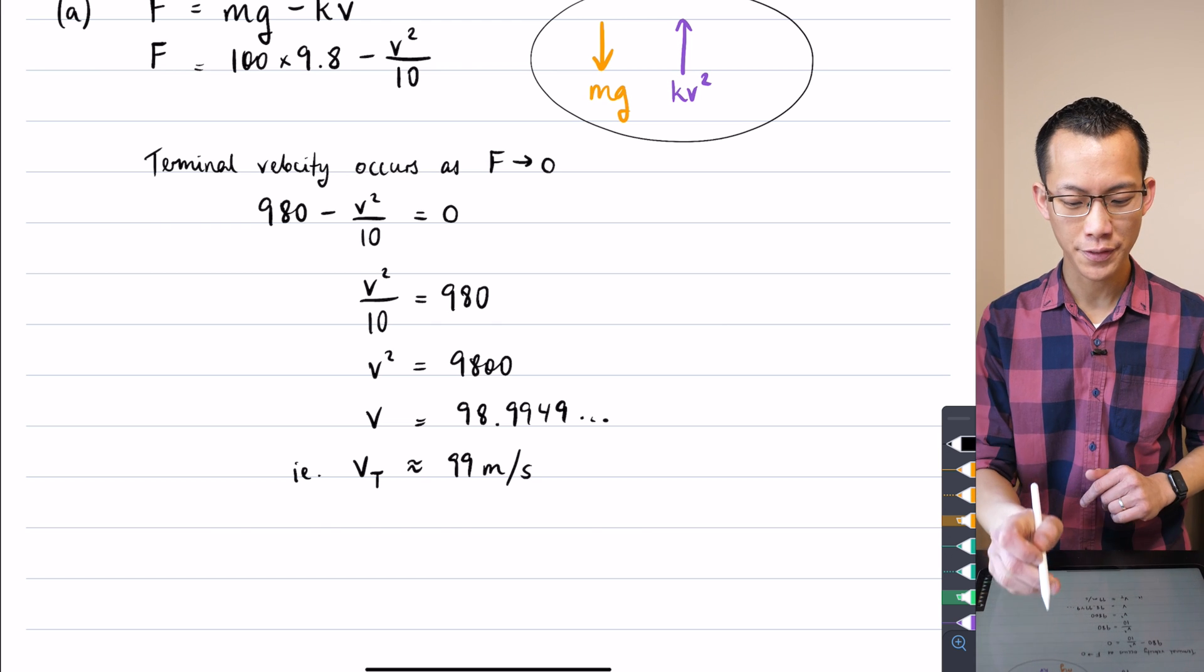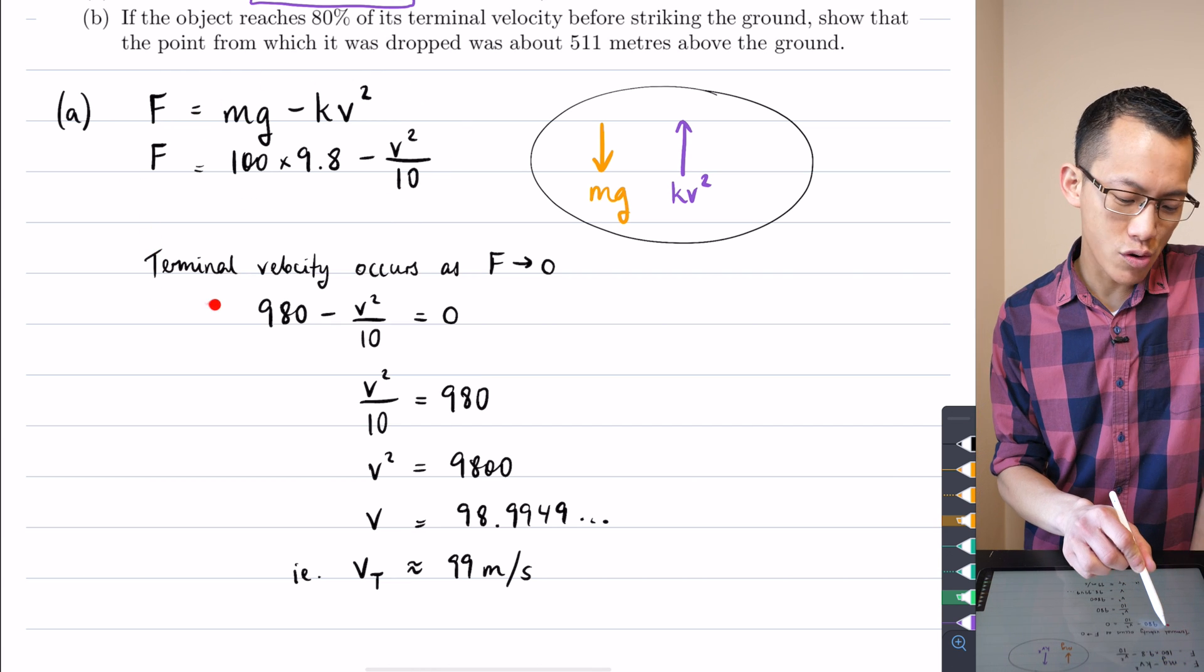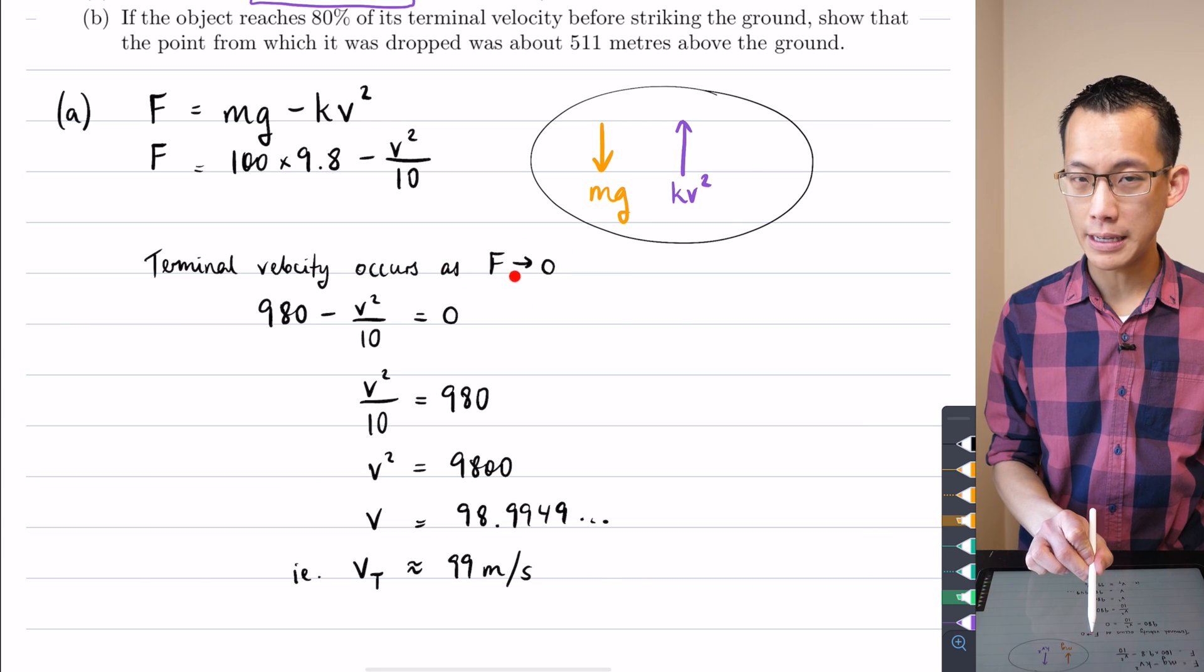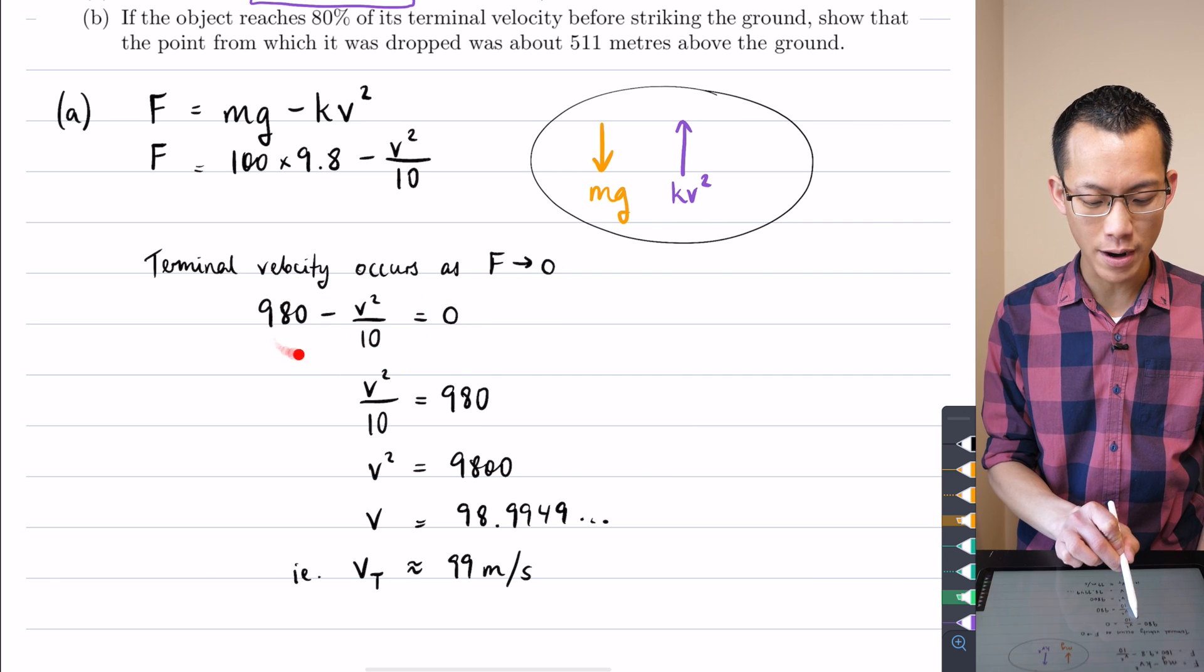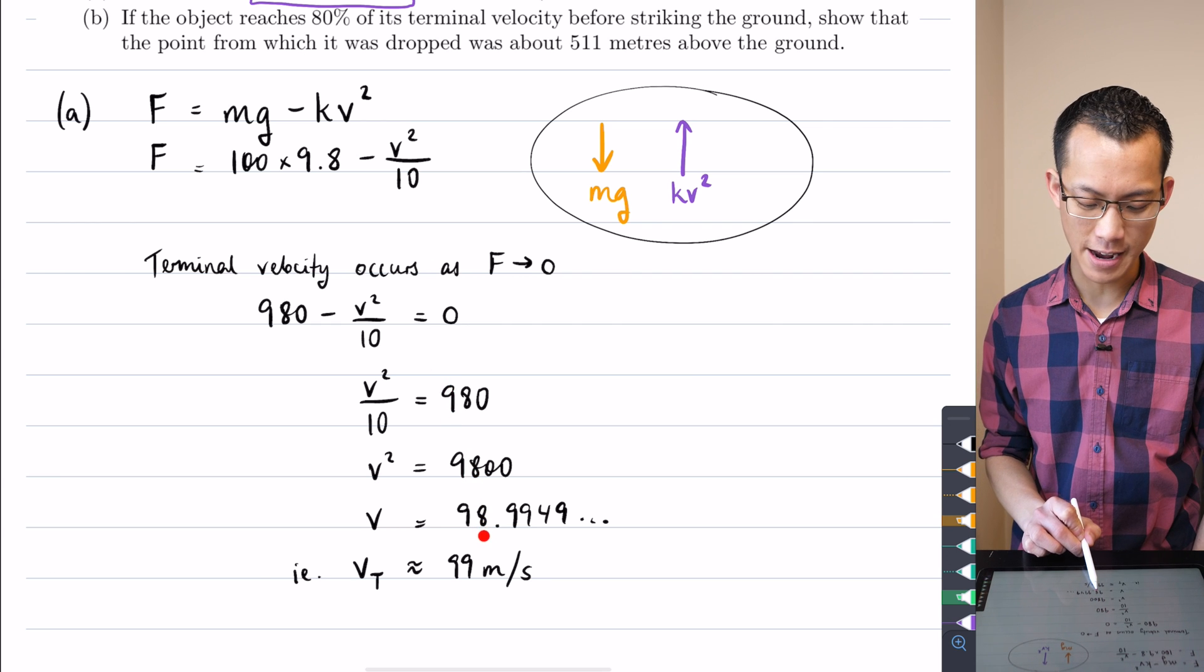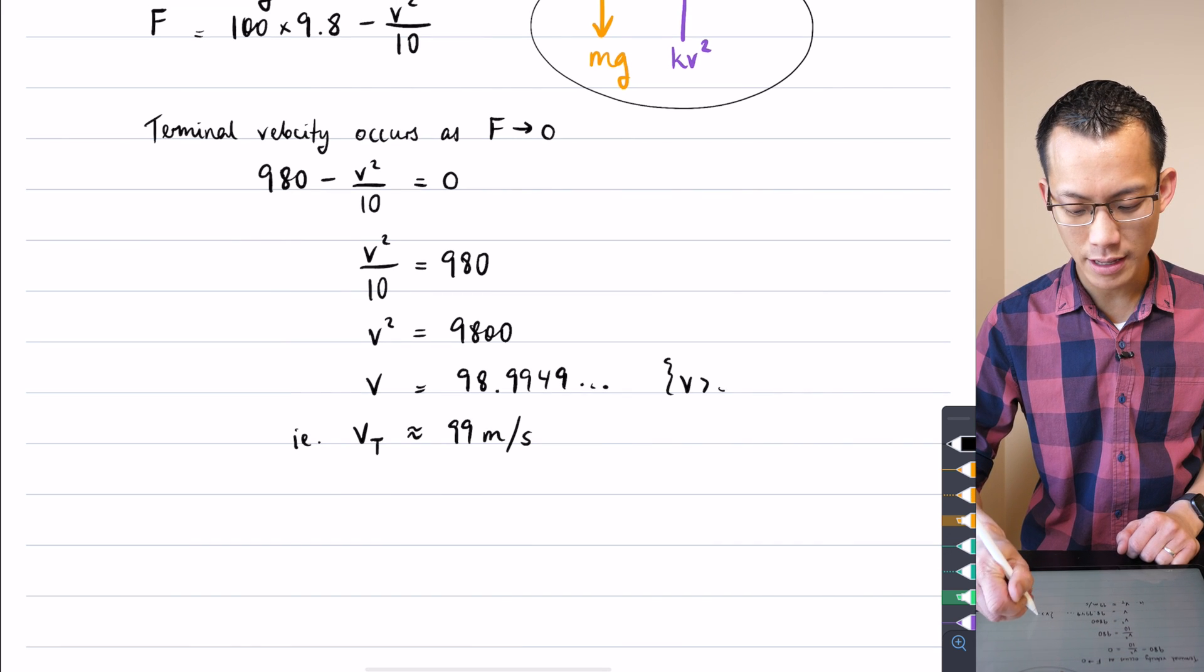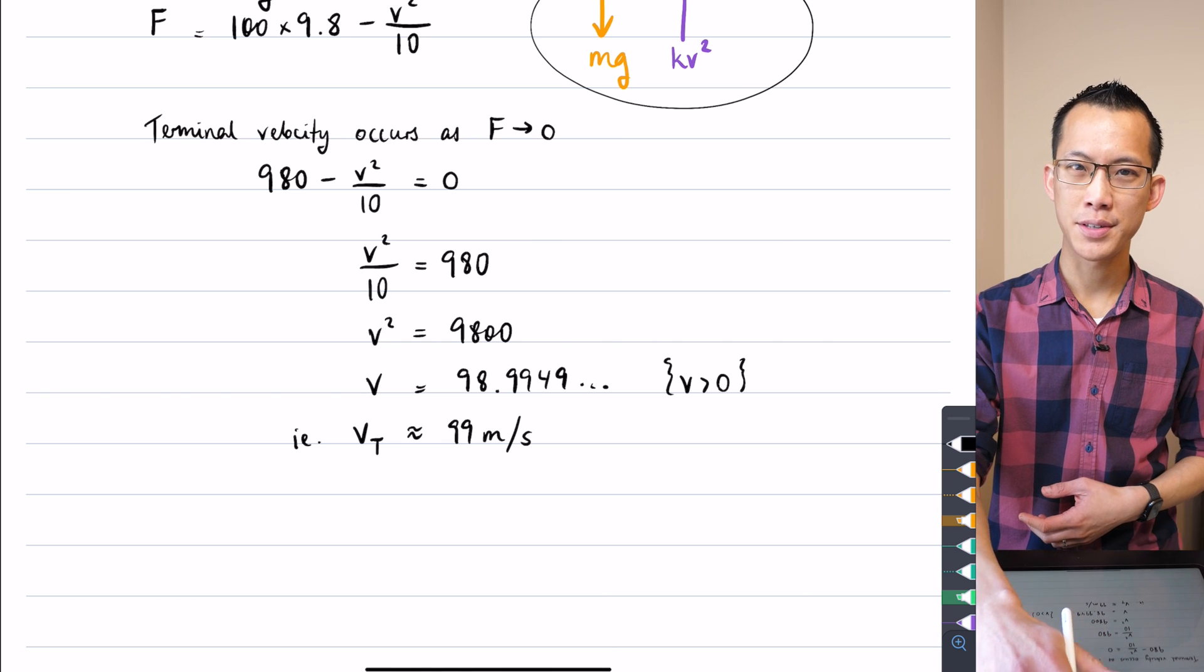So before we go any further, let's just remember how we did that. We set up our equation here, our force equation. And then we just said, well, your terminal velocity, once you reach that, you're not going to be speeding up or slowing down. So that force should be getting close to zero. So I've just solved for v when the force equation gives me zero on one side. And then this is just algebra from here. Probably worth noting that in this frame of reference, it's just a downward journey. So that's why I'm only considering the positive value for v when I take the square root of both sides.